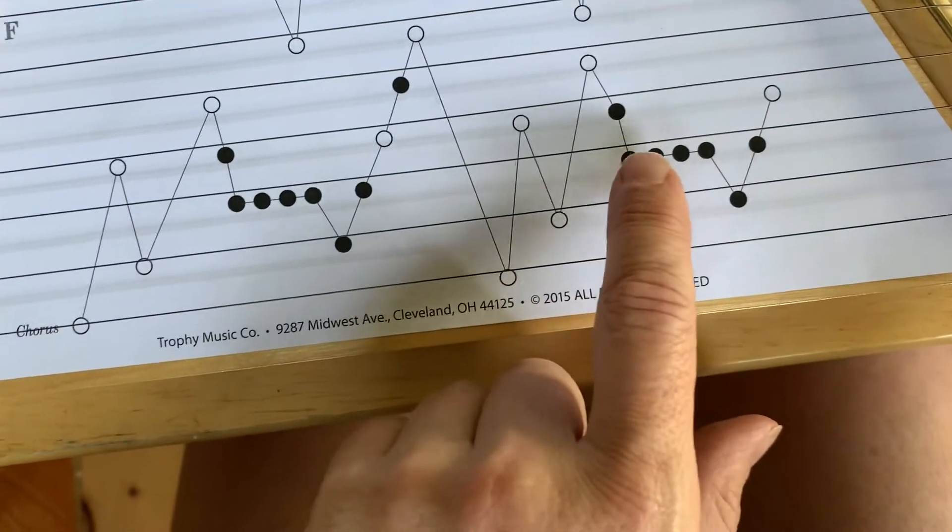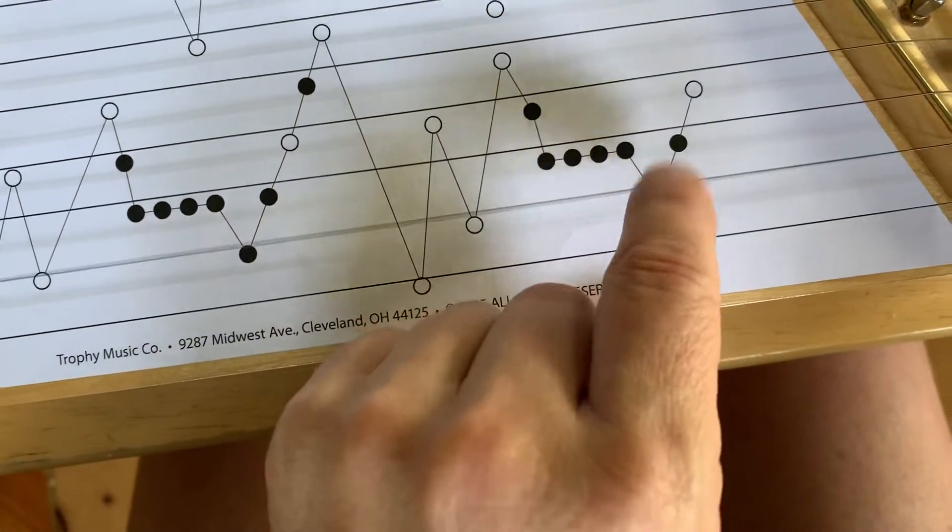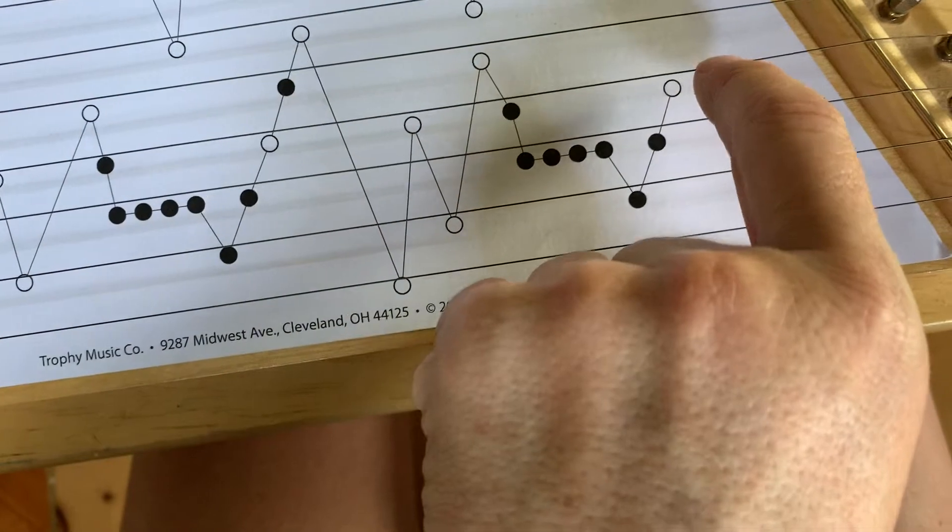So did you notice when there's four dots in a row, I just play the same note, four in a row? One, two, three, four, and then this note, and then this note, and then the end.